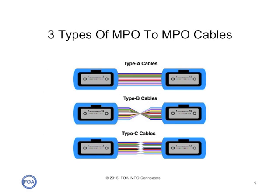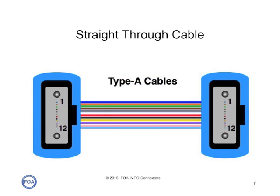There are three different types of MPO to MPO cables: Types A, B, and C, and we'll look at them more closely so you can see how they are configured. Type A cables are straight through. You can see the blue fiber is mapped from position 1 in one connector to position 1 in the second connector, and the aqua fiber goes from position 12 to position 12. The fibers are always in the same place in each connector.